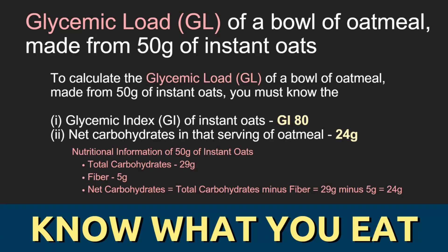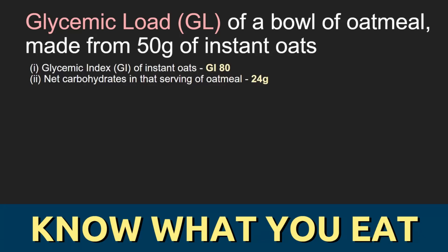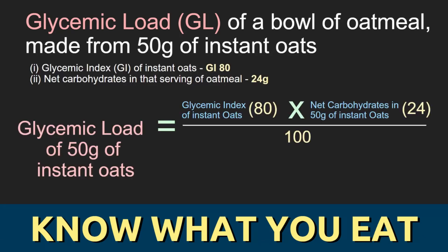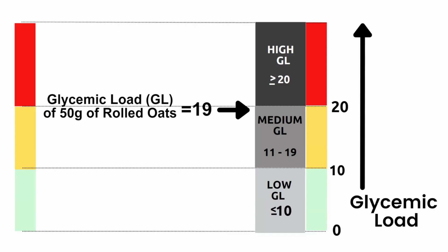You can calculate the net carbohydrates by looking at the nutritional information of the oats that you're using. In this particular example, I use the nutritional information of a particular brand of instant oats. In this brand, there are a total of 29 grams of carbohydrates in 50 grams of instant oats, of which 5 grams are fiber. So the net carbohydrates is 29 minus 5, giving you 24 grams. With this information, we can calculate the glycemic load of 50 grams of instant oats, which is the net carbohydrate content in grams multiplied by its glycemic index and divided by 100, giving us a calculated glycemic load of 19, which puts it at the highest end of the medium glycemic load range.